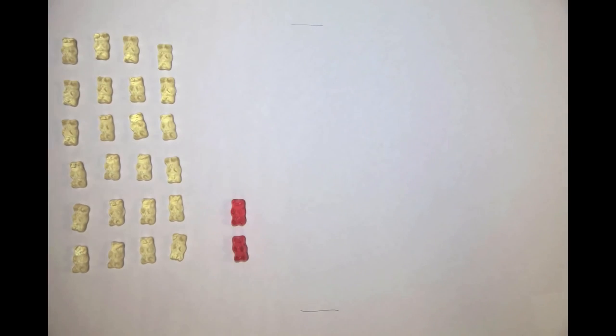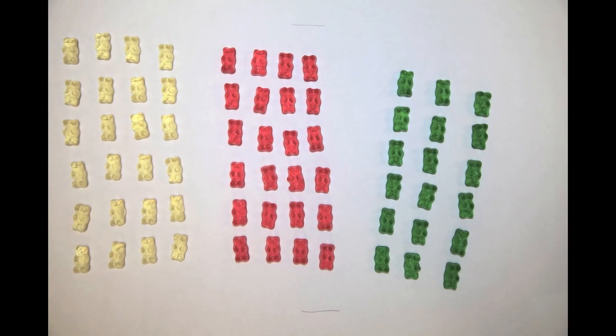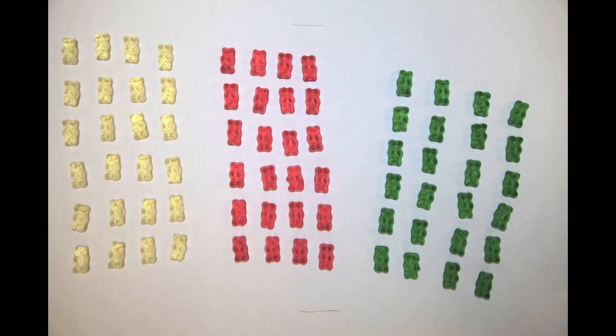The very simplest epidemiological model, the SIR model, makes use of three categories. Susceptible, the white gummy bears, infected, the red gummy bears, and recovered, the green gummy bears.